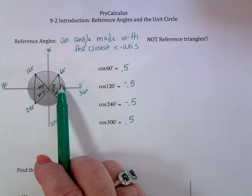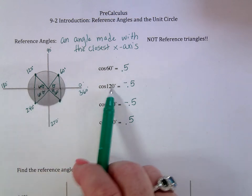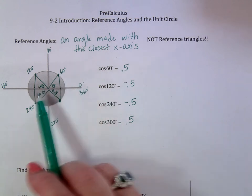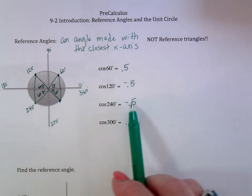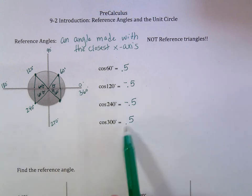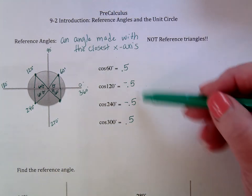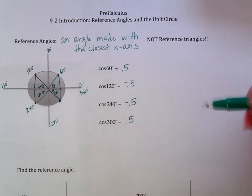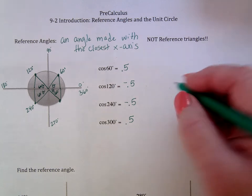We can go back to the chart for what quadrants angles are positive or negative in. Everybody's positive in the first quadrant. Sine and cosecant are positive in the second; everybody else is negative. In the third, tangent and cotangent are positive; everybody else is negative. And in the fourth quadrant, cosine is positive and everybody else is negative.